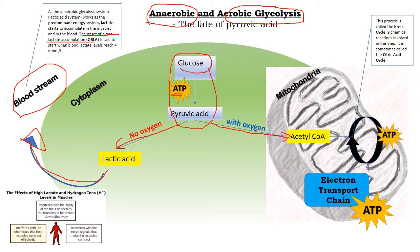In that scenario we would be predominantly relying on the lactic acid system, or the anaerobic glycolysis system. If we were seeing the onset of blood lactate accumulation and if that were to continue to rise, we would really be heavily relying on that anaerobic glycolysis system.